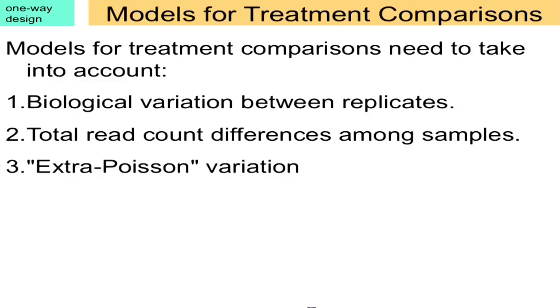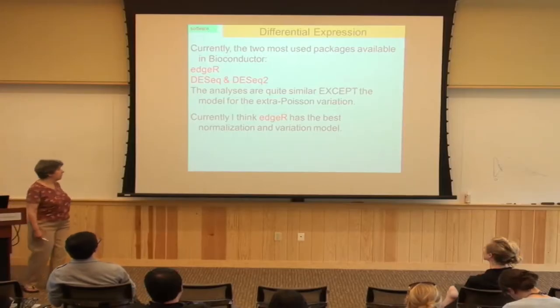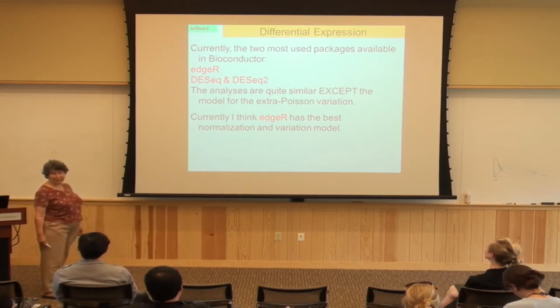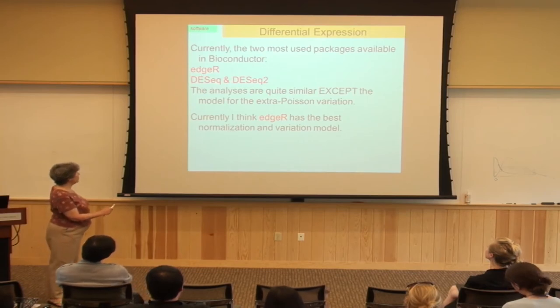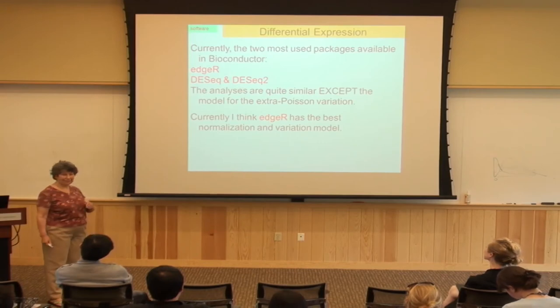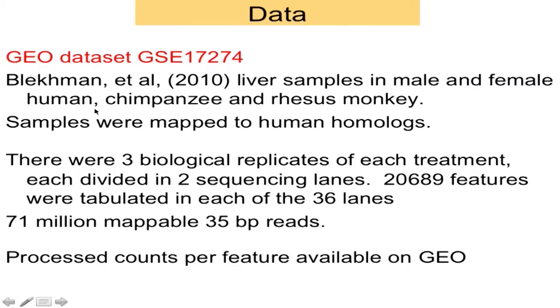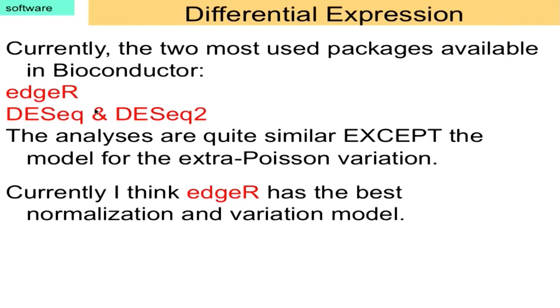The models need to take into account biological variation, library size variation between samples, and the extra Poisson variation. Right now there are several packages in Bioconductor. The two most used are EdgeR and DESeq, and there's a new version of DESeq in parallel with the old one. The model is quite similar for DESeq and EdgeR — what's different is how they handle the extra Poisson variation. Right now I think EdgeR does the best job of normalization and shrinkage, but it's a tight competition — they're kind of leapfrogging each other.